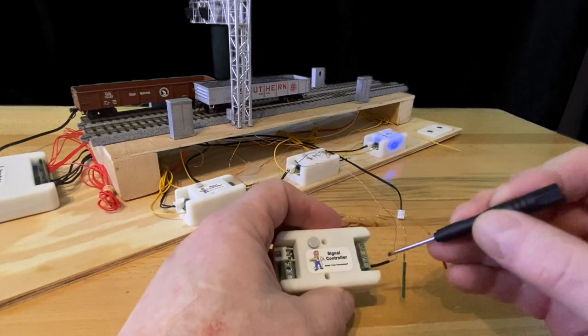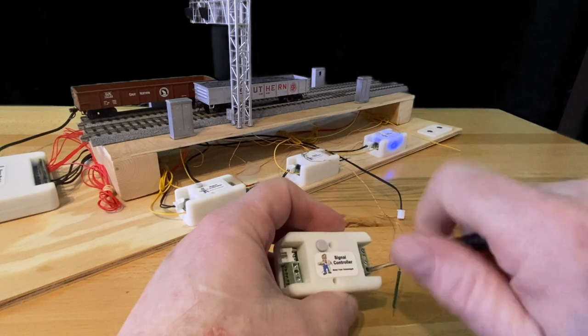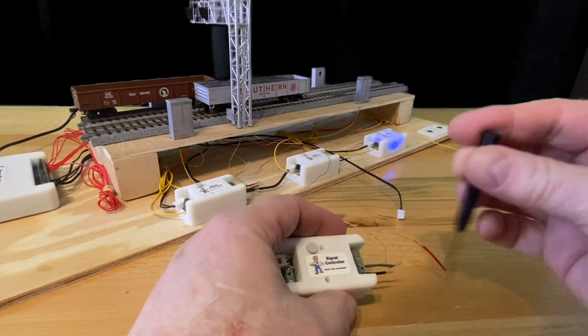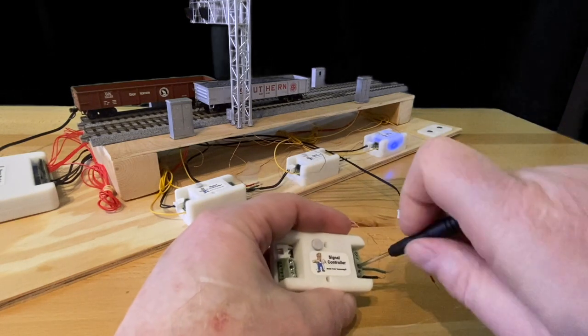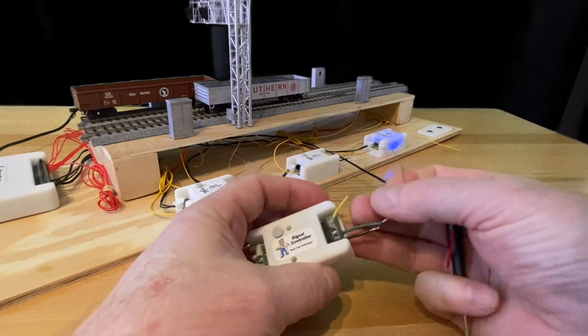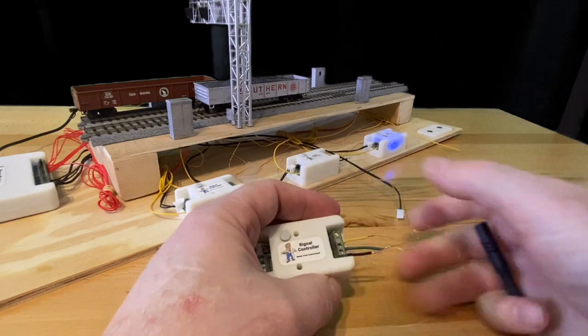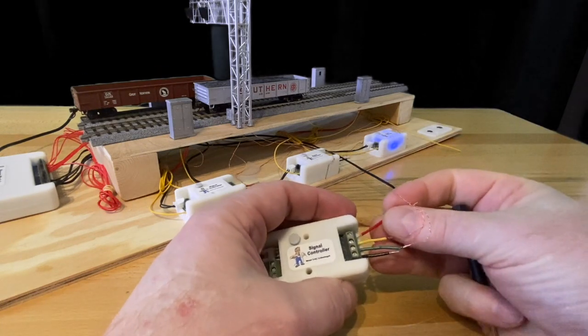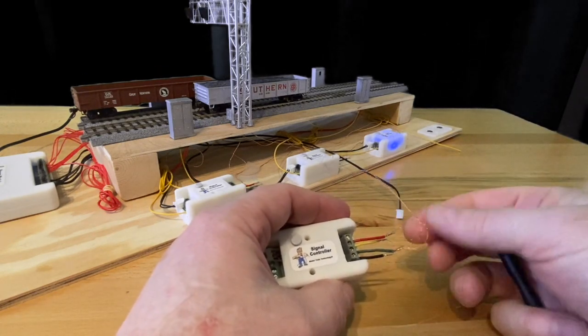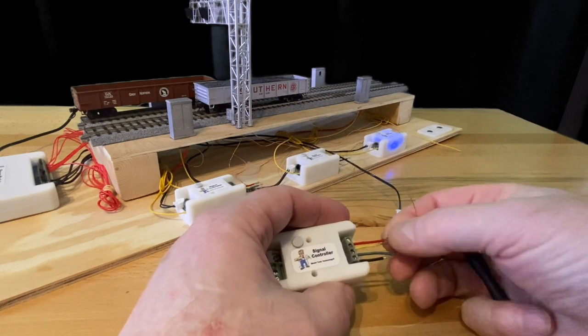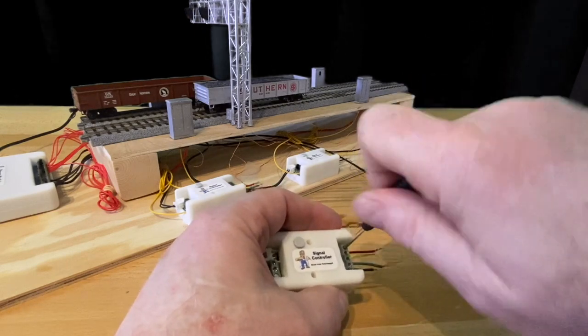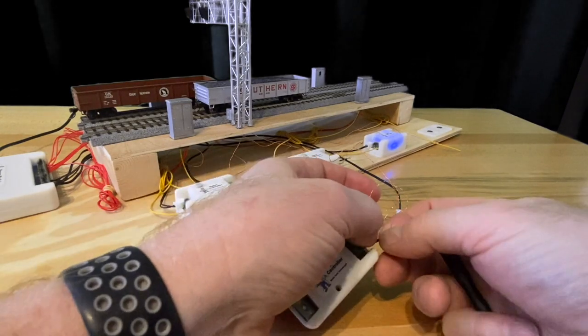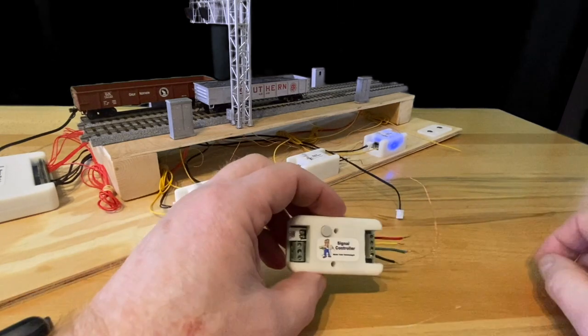I take the screwdriver which we include with the signal controller and the order is the common first, followed by green, just snug, not tight. Then yellow, and lastly red at the top. These are getting a little jumbled up but as I mentioned, they are insulated and we won't have to worry about them.